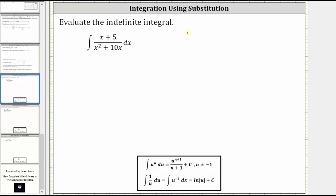So let's begin by letting u equal x squared plus 10x, and therefore differential u is equal to u prime times dx where u prime is equal to two x plus 10.